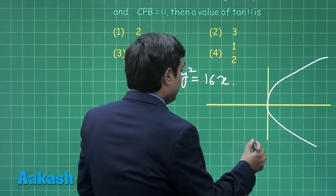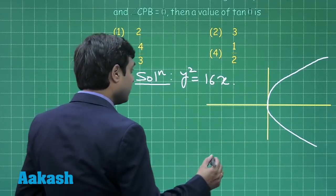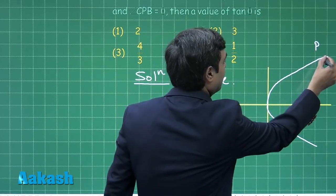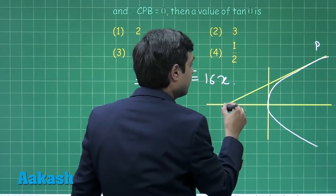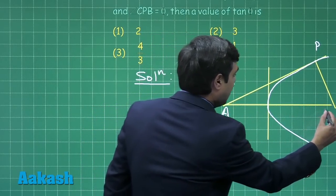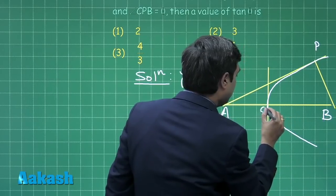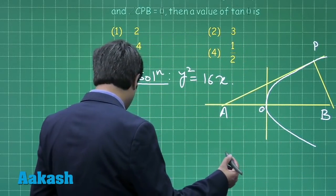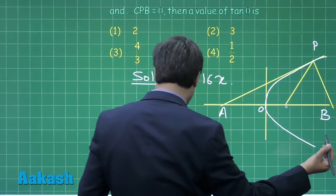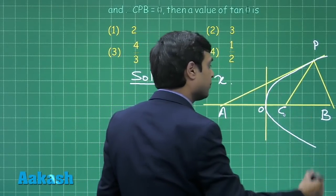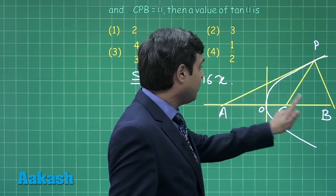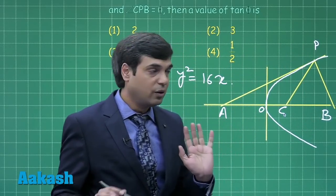For this parabola it is given that at a point P, tangent is drawn like this one. A normal is drawn like this one. These are intersecting at points A and B. Also given to me that C is the center of this circle. Let us consider point C somewhere here. This is C, center of the circle through A, B and P.